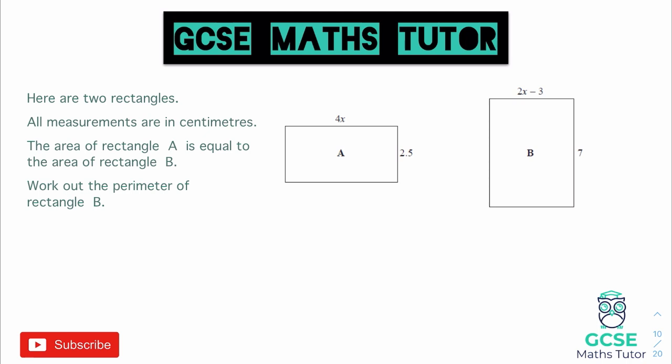So let's have a look. So the area of rectangle A would be 2.5, the height or the width, whichever way you look at it, multiplied by 4X, that length along the top there. So that would give us an expression for the area of rectangle A. Now 2.5 times 4, that is 10, so this would be 10X, and that would be an expression for the area of rectangle A. So there's our first expression.